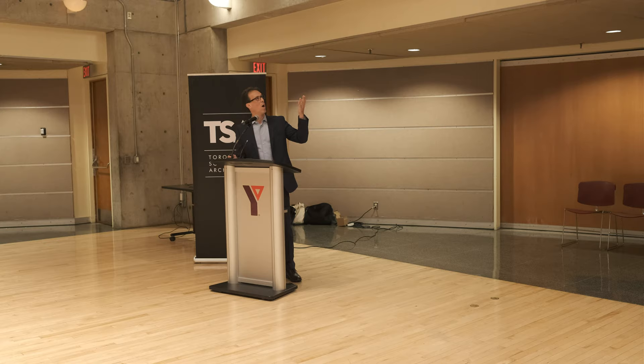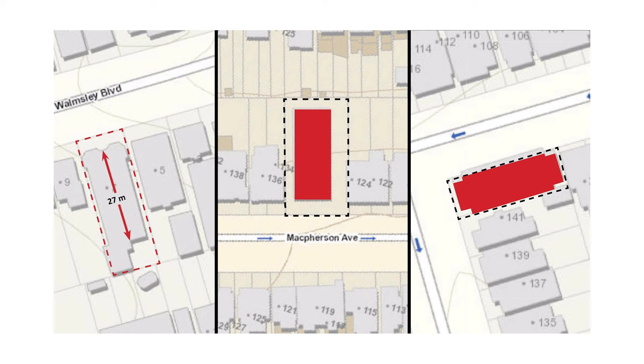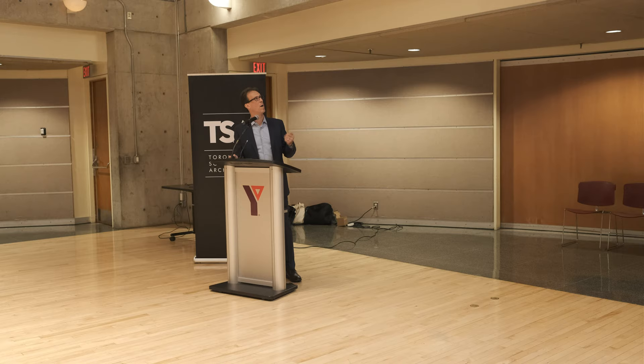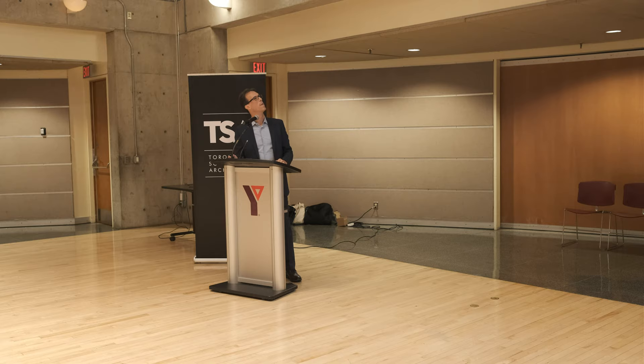The walk-up apartment would be a permitted use in the RD zone, but to actually make it work, it pretty much requires building across the full lot — extending all the way back with significant lot coverage. As built, an apartment has a 14-meter building depth limit in the RD zone, 17 meters for a house — that's 27 meters total for these examples at 20 meters. You have density allowances of 0.6 and 1, while these typically are one and a half or two.